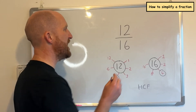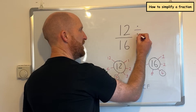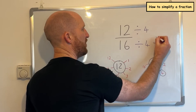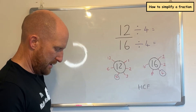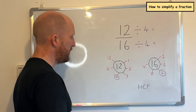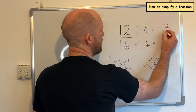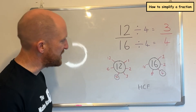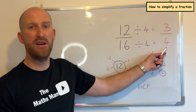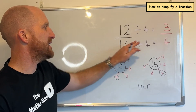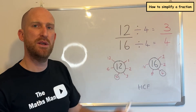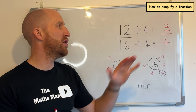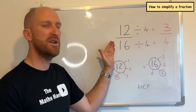Then what we're going to do is take that four — the highest common factor — and divide the numerator and the denominator by four. So 12 divided by four is three, and 16 divided by four is four. This gives us our final simplified fraction. So 12 sixteenths is the same as three quarters. If you have found the highest common factor, you have found the lowest possible form of 12 sixteenths.